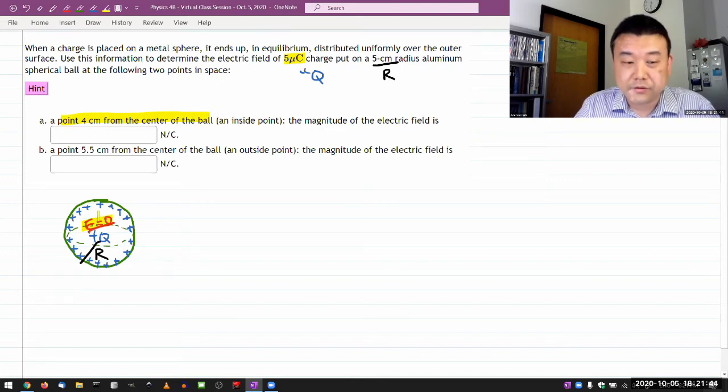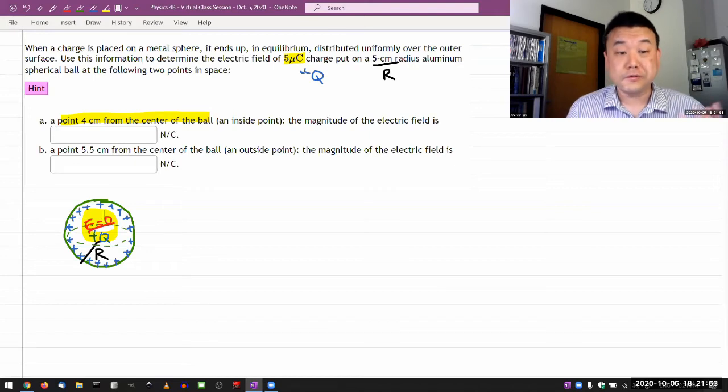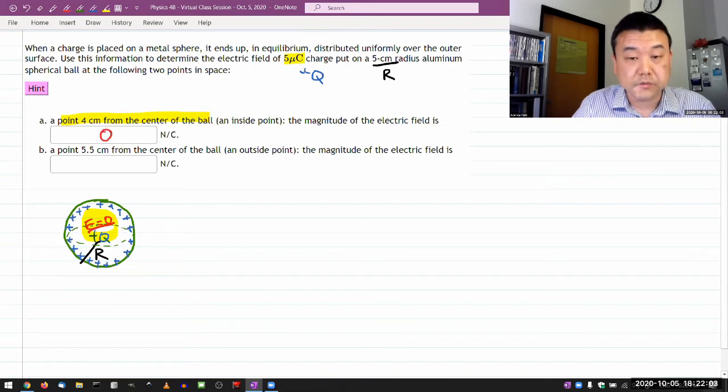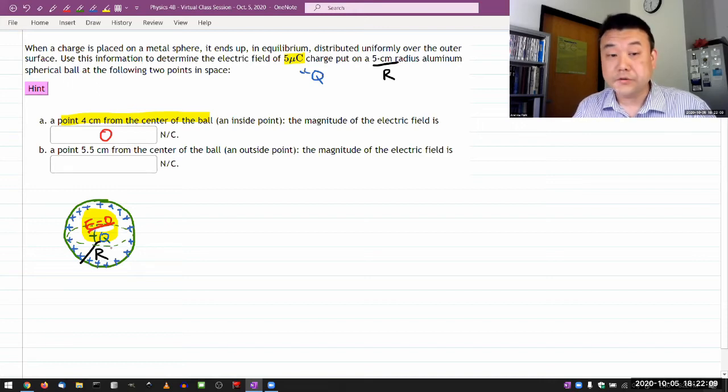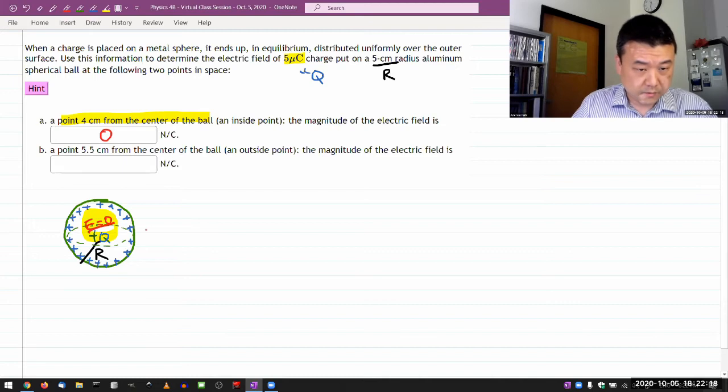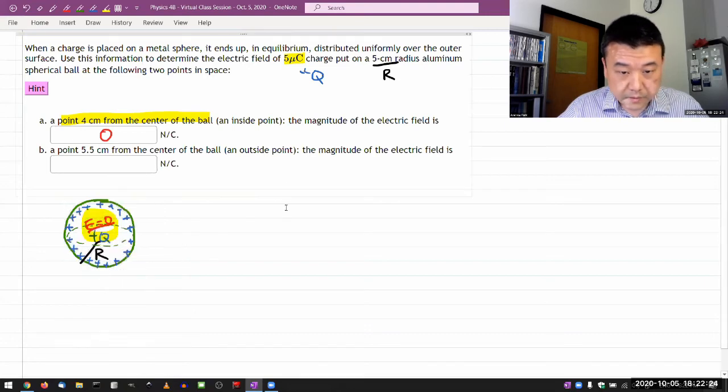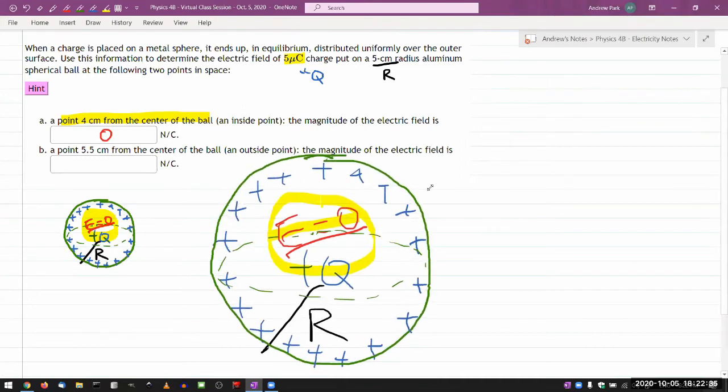It ties directly into what I was saying just now that the charges on the metal sphere are distributed to make the electric field inside zero. So if you knew that, then you immediately know that the answer to this is zero. Magnitude of electric field inside is zero newton per coulomb. Now, if you didn't know it, then what you would do is application of Gauss's law.